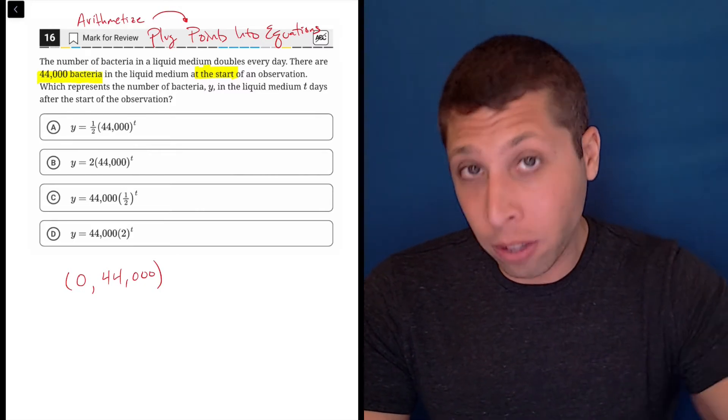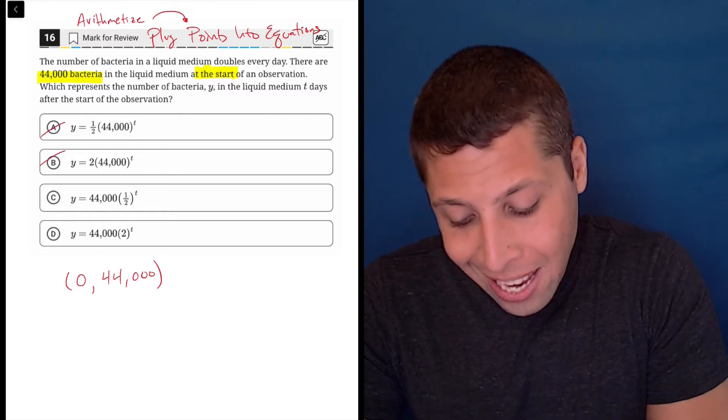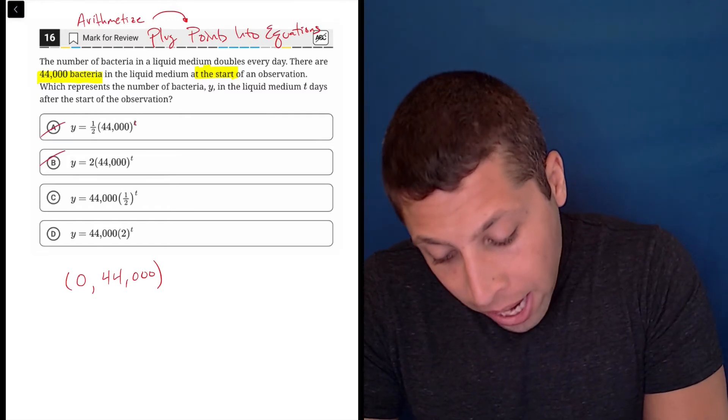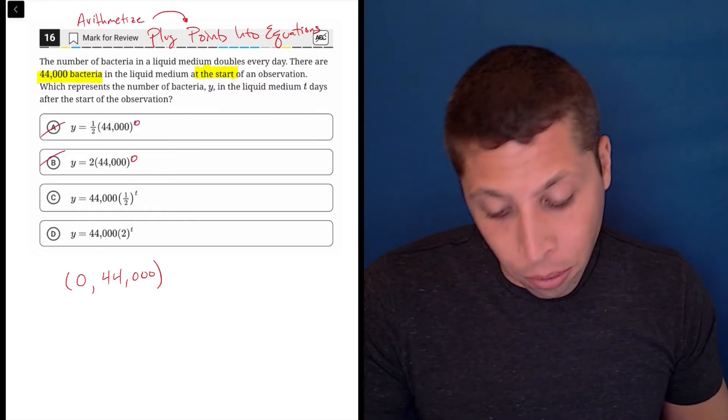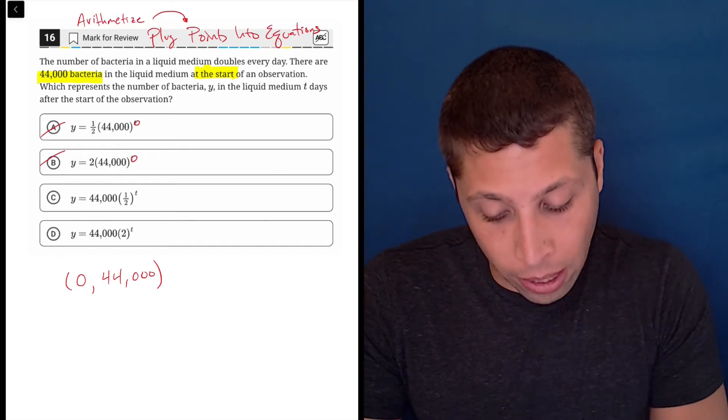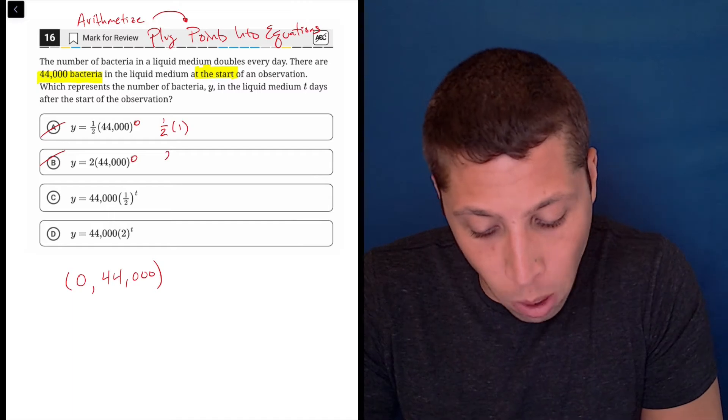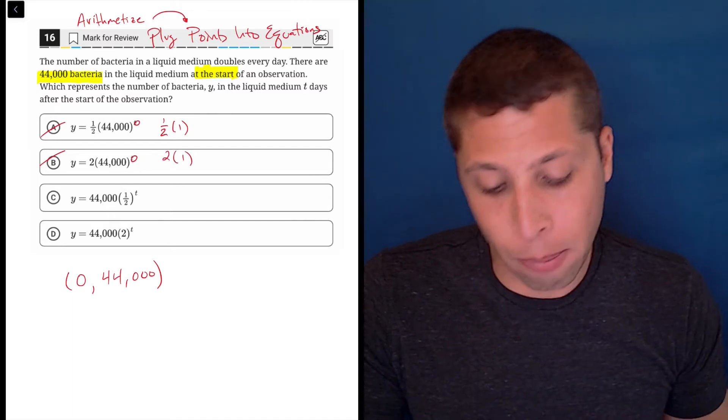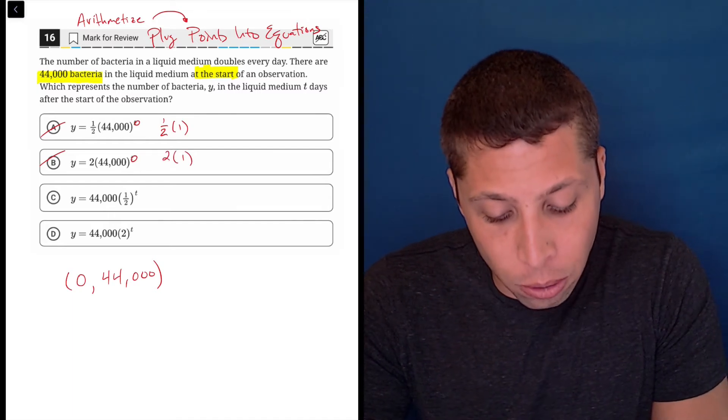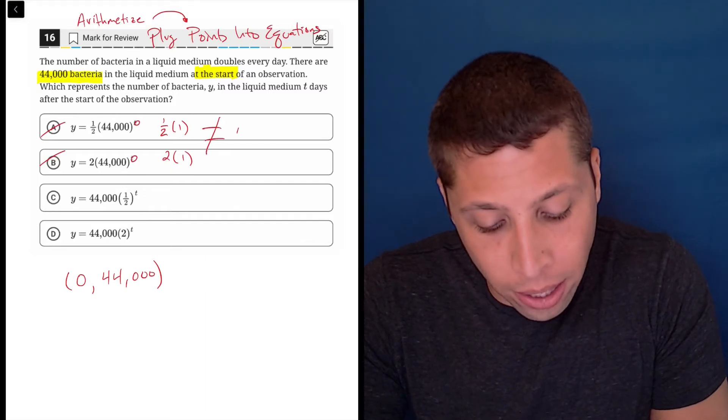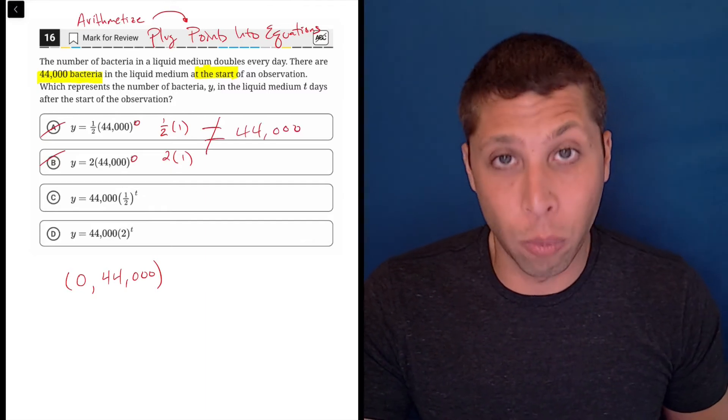Now if we plug that point into the equation, we're going to have a problem with choices A and B. Because if we raised either of these things to the zero, that 44,000 is going to become a one. So choice A basically becomes one half times one and choice B becomes two times one. So neither of those is going to give us what we want, which is the 44,000 that we have as our Y coordinate.